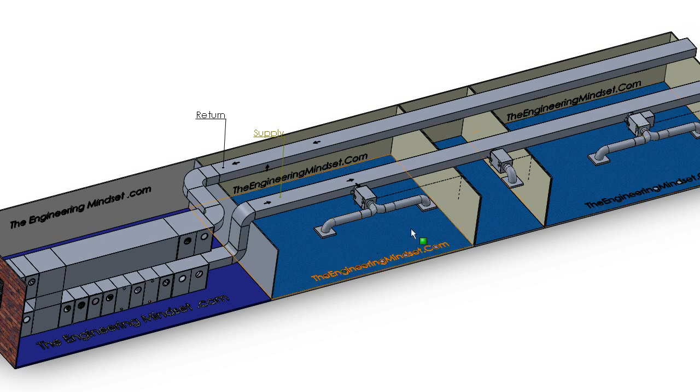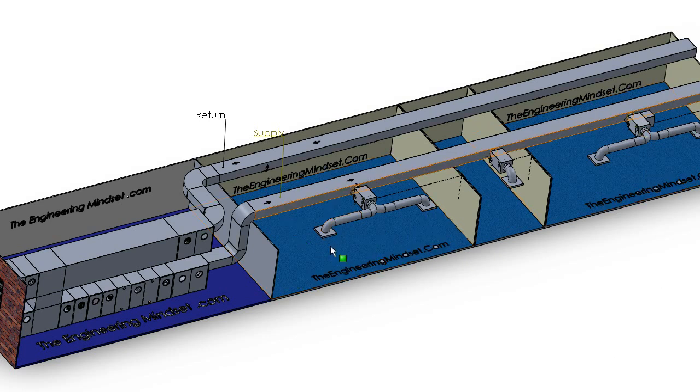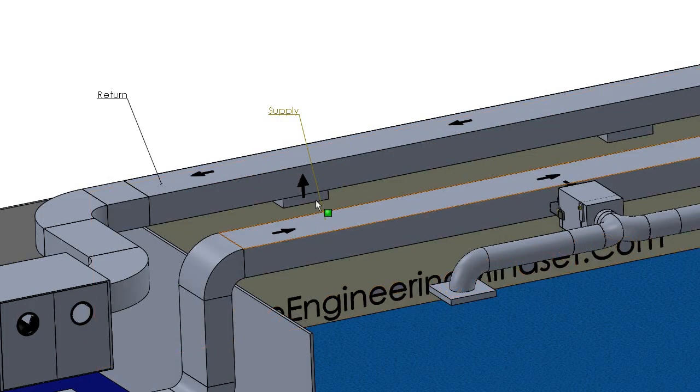That air distributes into the room through these diffusers, spreads across. And then, as you can see at the back here, there are the return grills where the air, or the dirty used air, is picked up and sent back to the AHU.